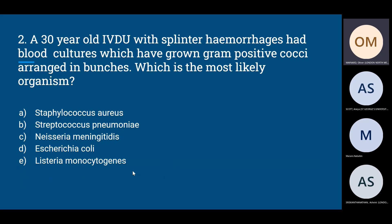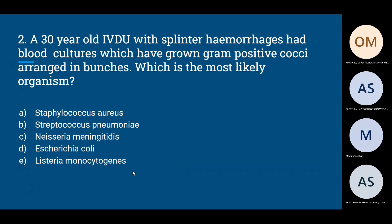Question two: a 30-year-old intravenous drug user presents with splinter hemorrhages, and blood cultures have grown gram-positive cocci arranged in bunches. Which is the most likely organism? The options are: A) Staphylococcus aureus, B) Streptococcus pneumoniae, C) Neisseria meningitidis, D) Escherichia coli, or E) Listeria monocytogenes. The answer is A — Staphylococcus aureus.